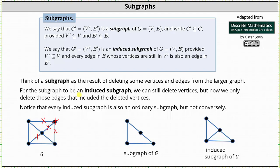For the subgraph to be an induced subgraph, we can still delete vertices, but now we can only delete those edges that included the deleted vertices. So for example, looking at the work that we showed here to form the subgraph of G, if we want an induced subgraph of G, we can no longer delete this edge here because it doesn't include the deleted vertex. So if we don't delete or remove this edge here, we have the graph shown here on the far right, which is an induced subgraph of G.